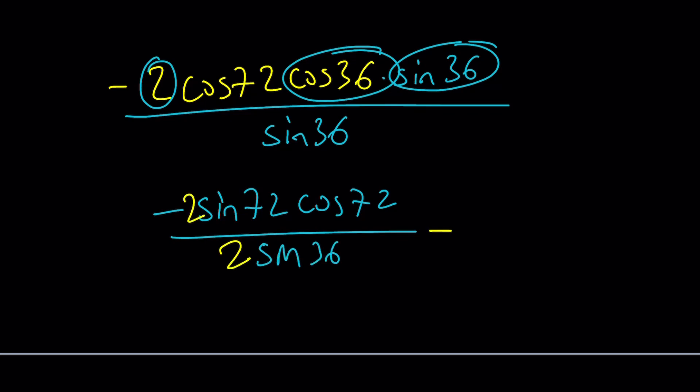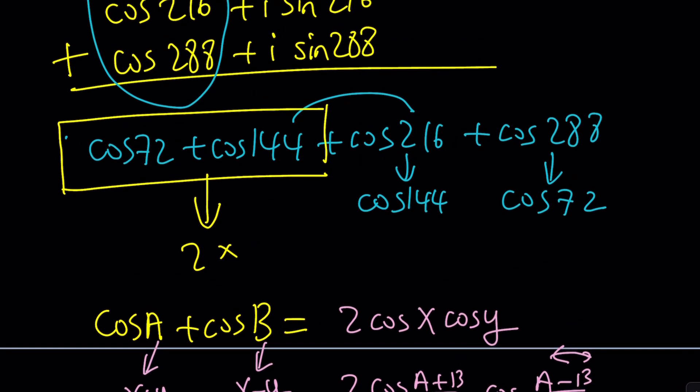And now this is going to turn into negative sin 144. Oops. Let me rewrite it. It didn't look good. Negative sin 144. And at the bottom, you get 2 times sin 36. And, of course, sin 144 and sin 36 are equal because they are complementary, right? Or are they supplementary? I think supplementary. Anyways, you get the idea.